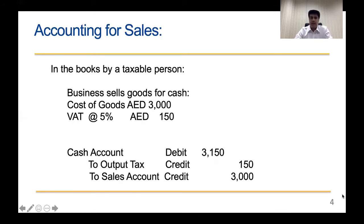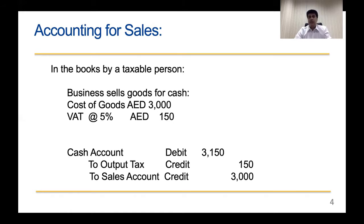Now let's look at the sales accounting entry. For the same transaction — goods valued at 3,000 with 150 VAT — when selling goods, either Cash or Receivable account is debited for 3,150. Output Tax is credited for 150, and the Sales account is credited for 3,000. I'm not going into too much detail as these are basic principles we all know.